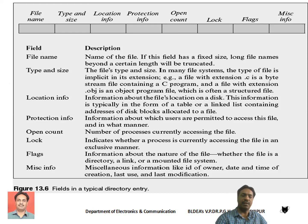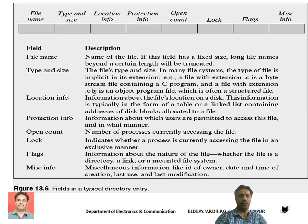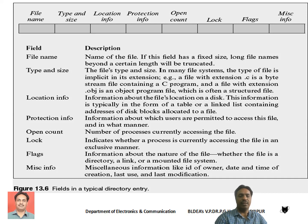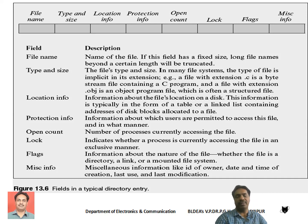The directory entry contains several fields. First, it contains the file name — the name of the file, which may be of fixed or variable size. In DOS, file names are limited to only eight characters, but in Windows there is no limitation — the file name may contain any number of characters. The second field is type and size: the type of the file is specified, generally using the extension name to indicate the file type.